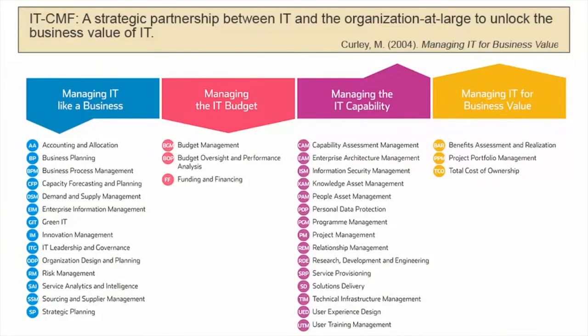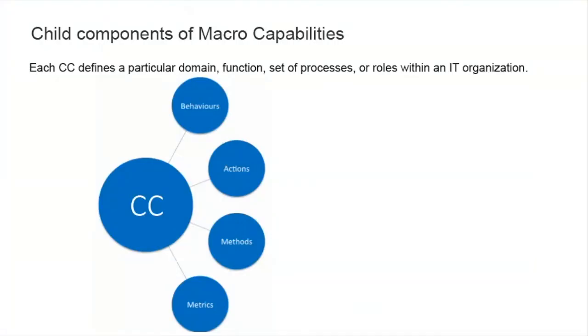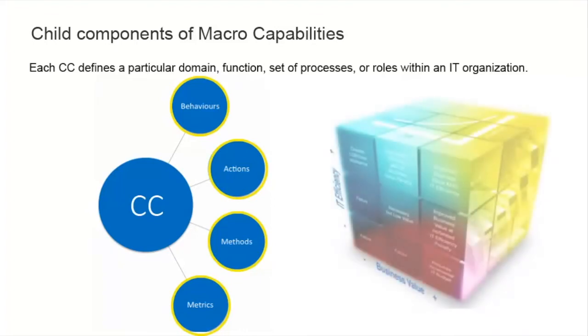IT-CMF can be characterized as a strategic partnership between IT and the organization to unlock the business value of IT. Critical capabilities, or CCs, are related to IT management capabilities that are central to IT's role within an organization. IT-CMF comprises 35 CCs. Each CC defines a particular domain, function, set of processes, or roles within the IT organization. CCs refer to a specific set of integrated behaviors, actions, methods, and metrics needed to deliver specific capability-related outcomes that support business value creation.